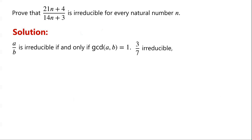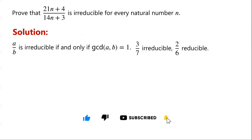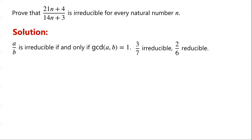For example, 3 over 7 is irreducible, as the greatest common divisor of 3 and 7 is 1. Meanwhile, 2 over 6 is reducible, as the greatest common divisor of 2 and 6 is not 1.